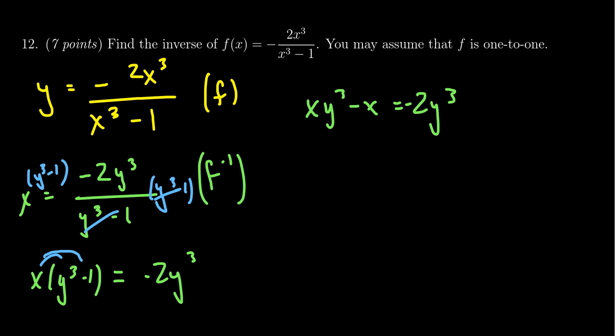So now we're in a situation where we can combine the y cubes together. So I'm going to move the negative 2y cubed to the left-hand side by adding 2y cubed to both sides. I'm going to move the negative x to the right-hand side by adding x to both sides. This then gives us xy cubed plus 2y cubed is equal to positive x.